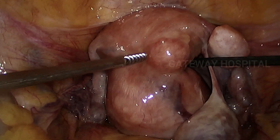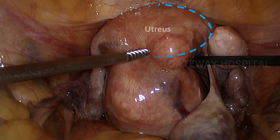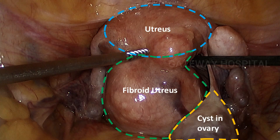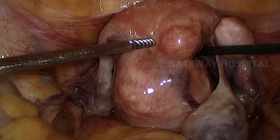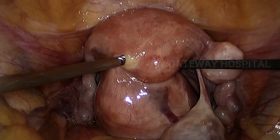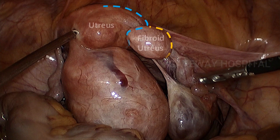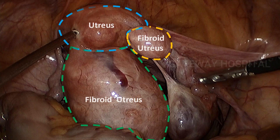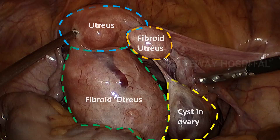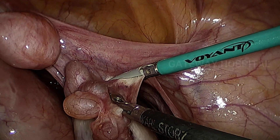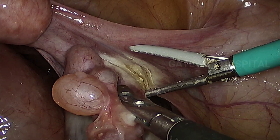This is a case of large fibroid uterus. You can see the uterus and the large posterior fibroid, and there is a cyst in the right ovary and one more fibroid on the right side. You can appreciate the anatomy here: uterus, posterior fibroid, and another fibroid. We are using the Voyant system, which is from Applied Medical.